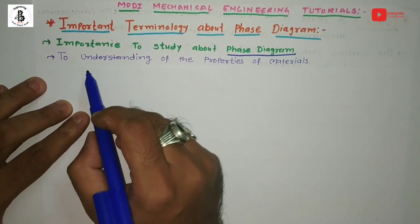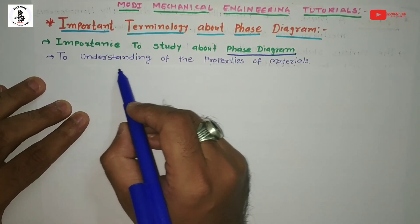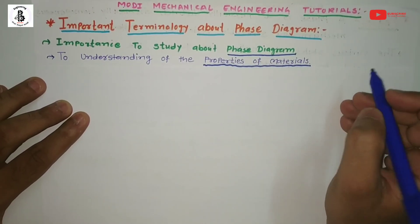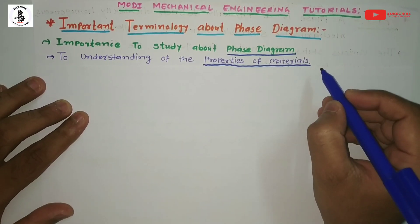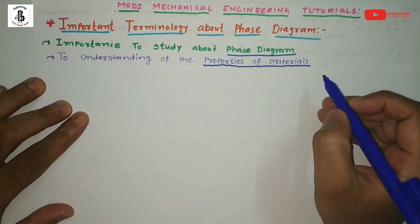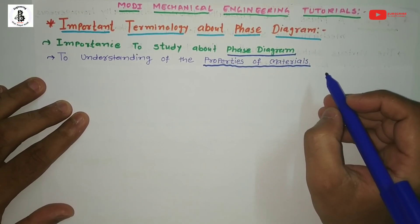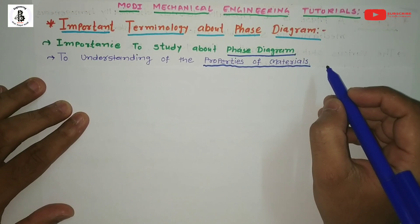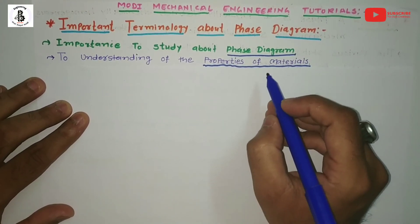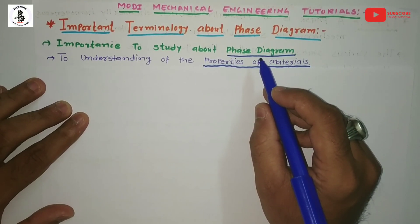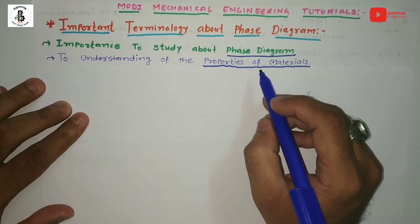The first importance of studying phase diagrams is for better understanding of the properties of materials. The properties of a material depend upon the requirements of engineering applications. These properties may be mechanical properties, electrical properties, chemical properties, etc., and they are present in various phases at different conditions like temperature, concentration, and pressure.